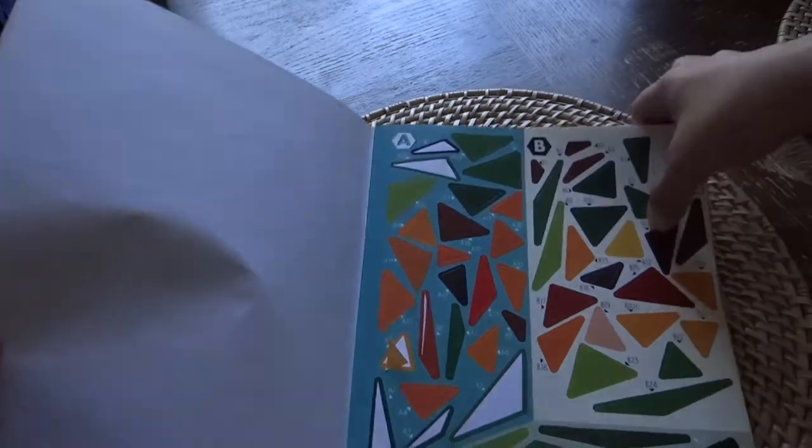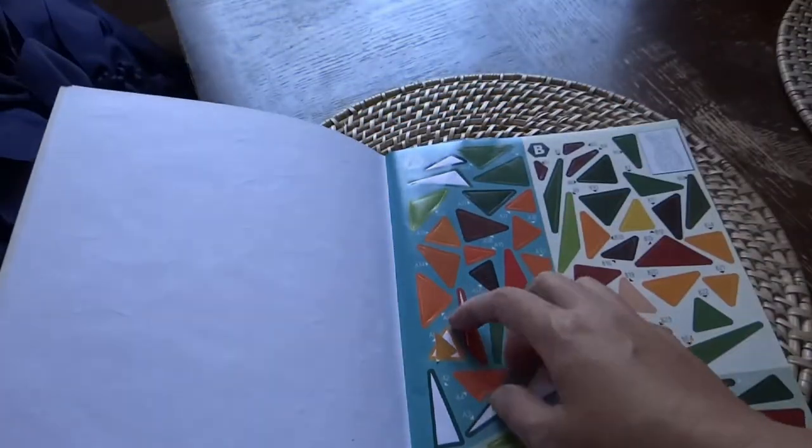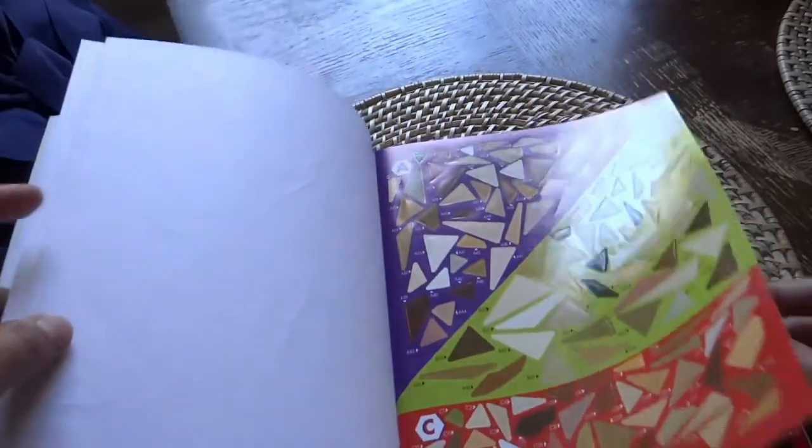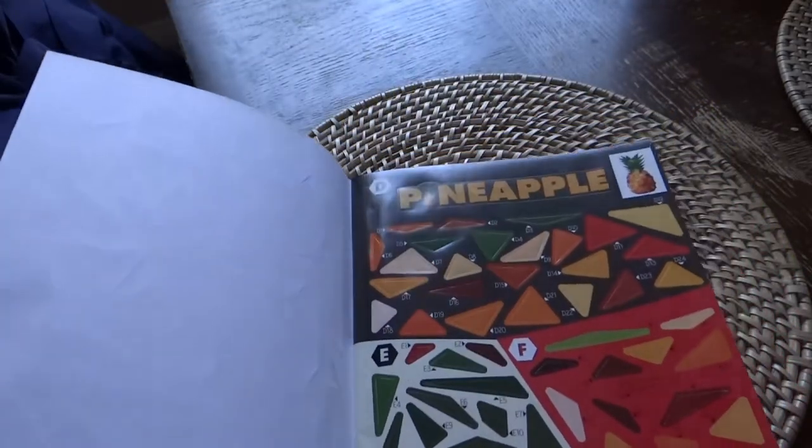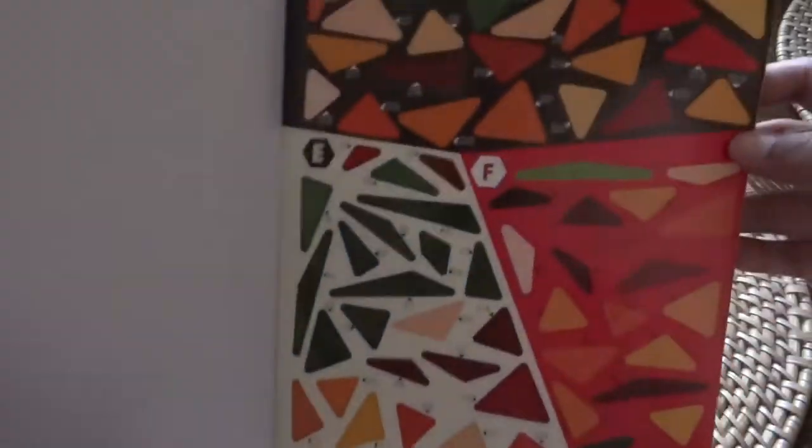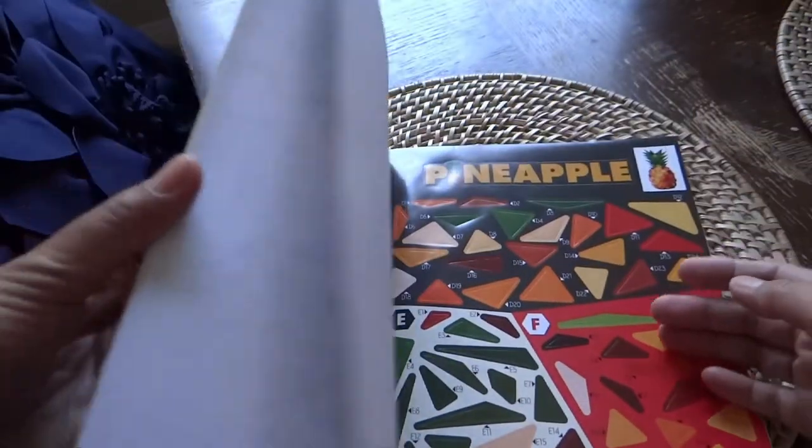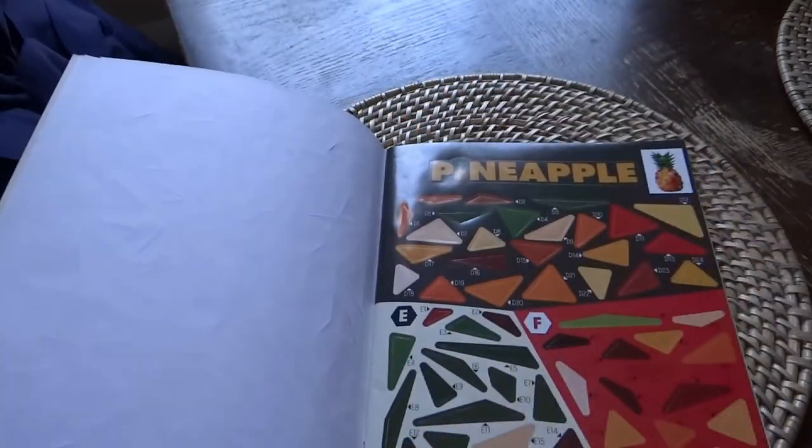Let's say this one, I'm working on this one with pineapple. So this is the guide, A to F, letter F. So A to letter F. And it has a lot of colors, the green for the leaves and the yellow.